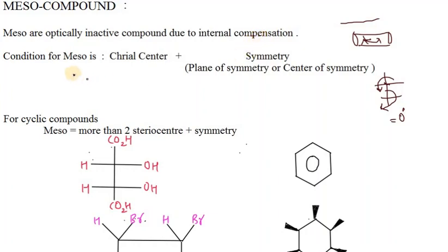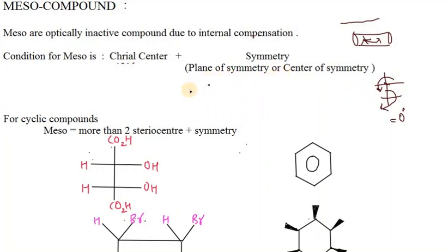What are the conditions for a mesocompound? It should have chiral centers — obviously, one part is able to rotate light because it has a chiral center. Plus, it should have symmetry, either a plane of symmetry or a center of symmetry. Both conditions should be fulfilled.